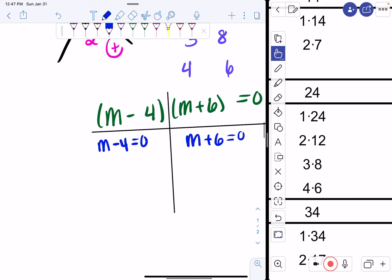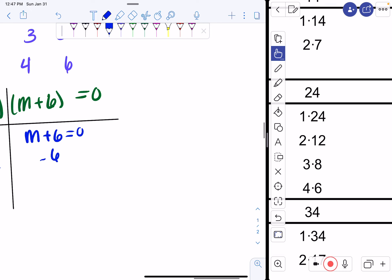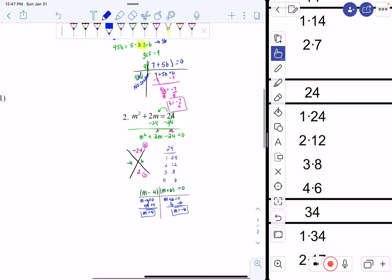I now solve both of these one-step equations. Add 4, add 4. I get m equals 4. Subtract 6, subtract 6. I get m equals negative 6. And that's your final answer. m equals 4, m equals negative 6.